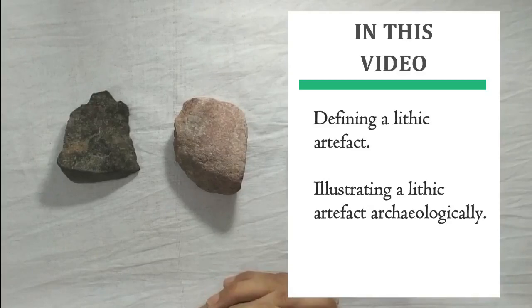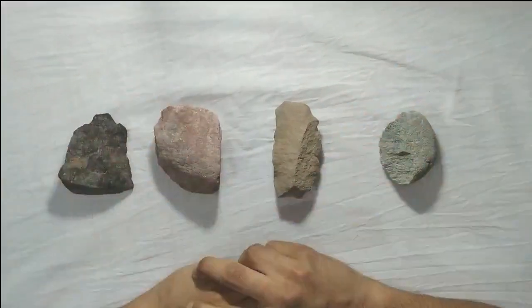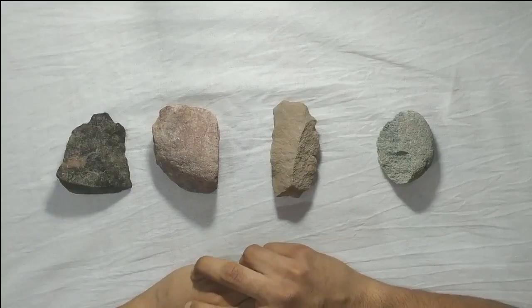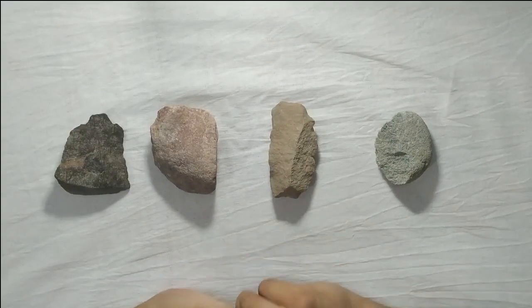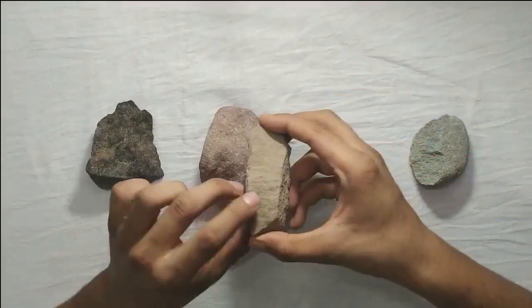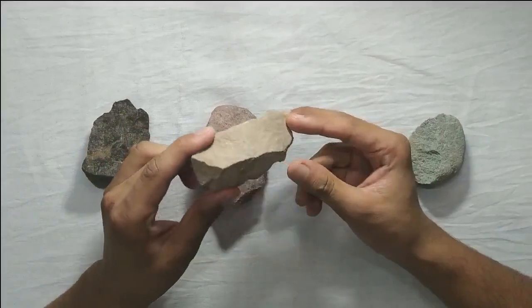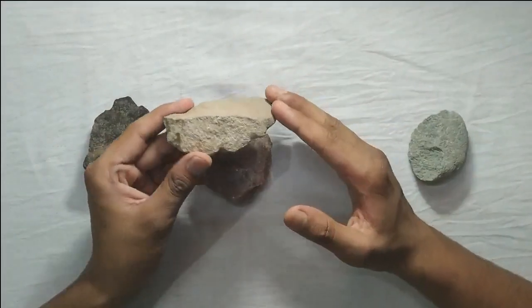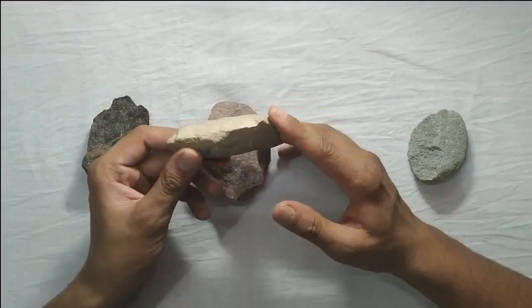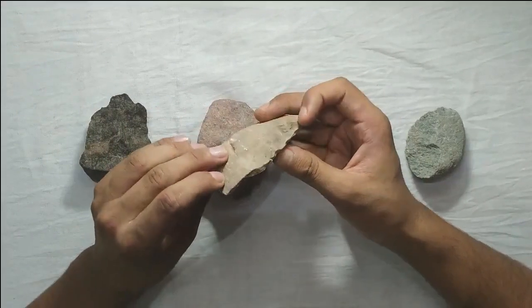From a lithic assemblage you will collect three types of artifacts: stone tools, flakes, and cores. Flakes are detached from the cores or the stone during the process of stone tool manufacture. They are usually discarded or sometimes modified into stone tools.